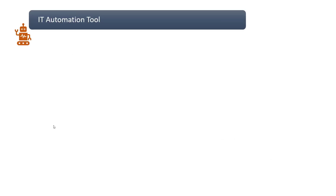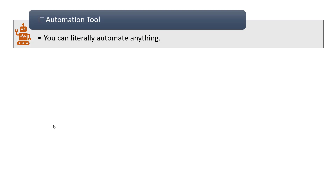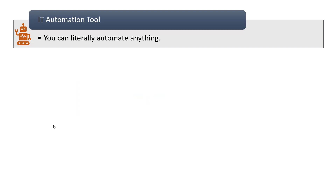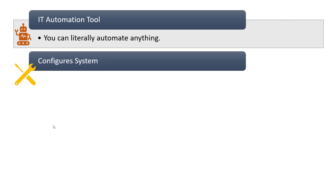Now let's understand some of the basic features of Ansible. Ansible is an IT automation tool — you can literally automate anything. You just need to understand what modules you need to use, the plugins, and in fact you can create your own custom plugins or modules if you want to achieve something which is not already available in Ansible.